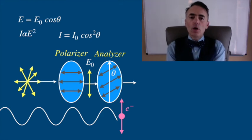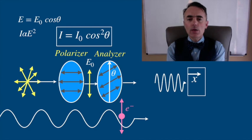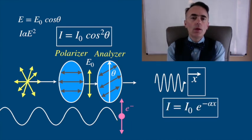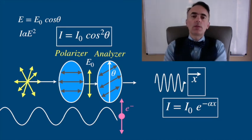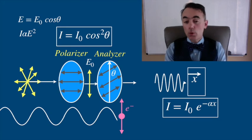The amount of irradiance that makes it through a thickness x of a dichroic polarizer is I0 e to the minus alpha x where alpha is a constant that depends on the material of the polarizer and x is the depth inside the polarizer.